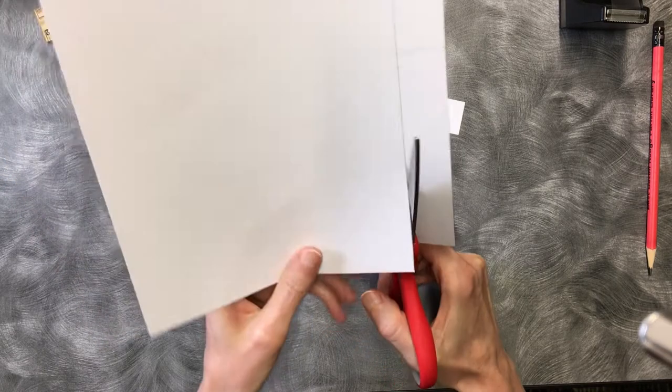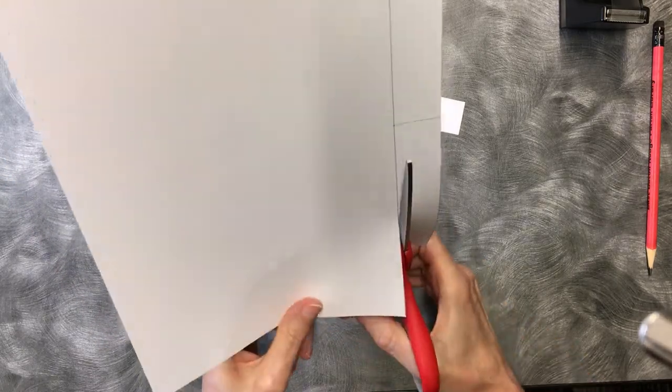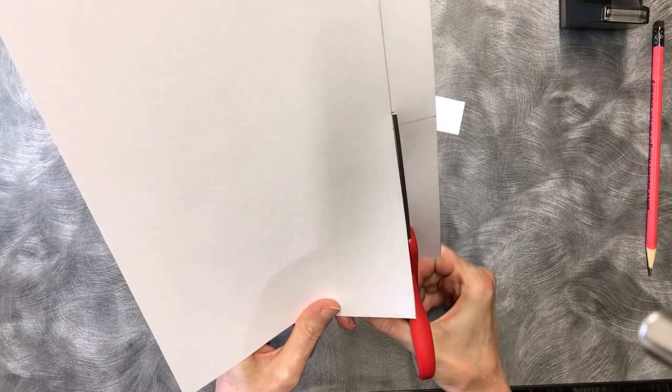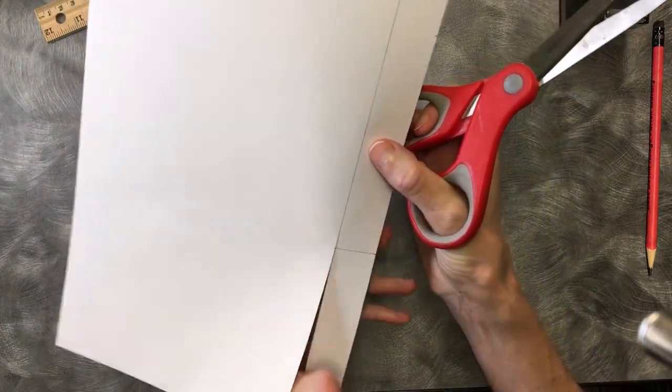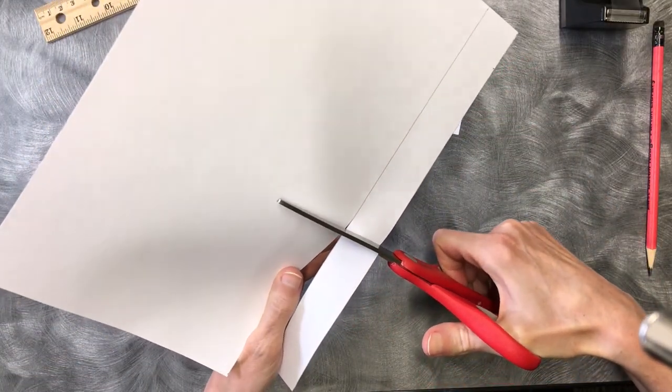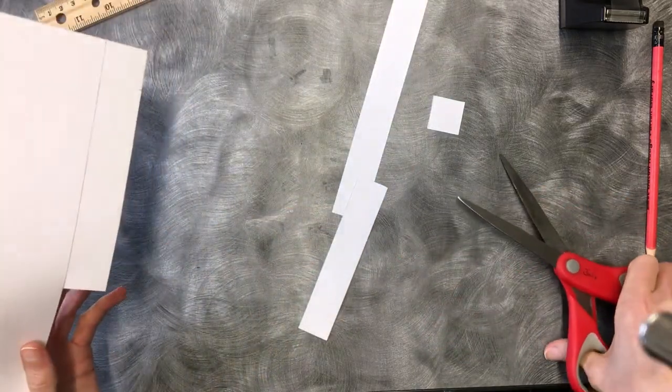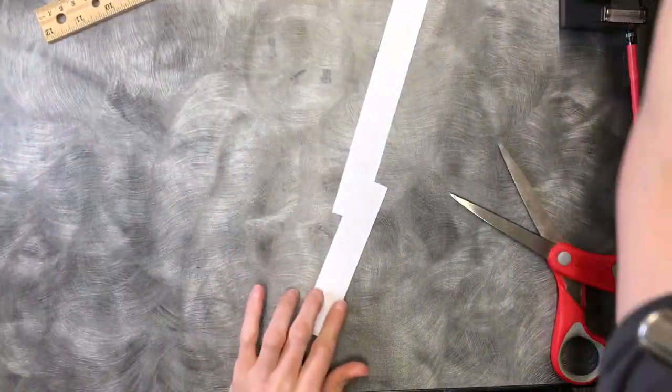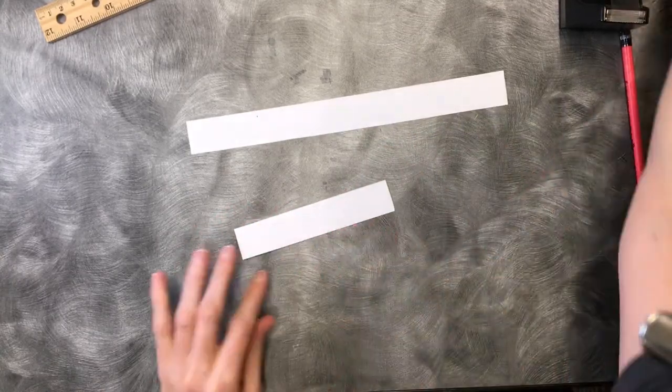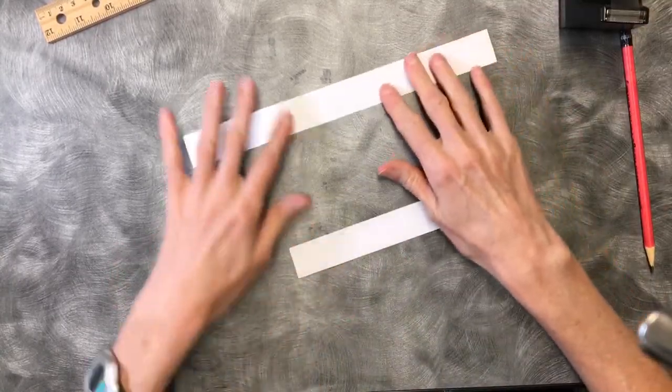The fun thing about this project is that after you make the first one you kind of see how it flies. Check it out and you can adapt it and make modifications like you do with your paper airplanes. And there, there's your five inch strip. Place that to the side. I'm pretty much done with the scissors for now.